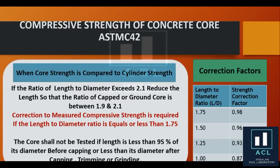If we see the cover-up test is not suitable, we will reject it. If the length-to-diameter ratio is 1.75, the correction factor is 0.98. If it is 1.5, the correction factor is 0.96. If it is 1.25, the correction factor is 0.93. If the length equals the diameter — per American standard — the correction factor is 0.87.